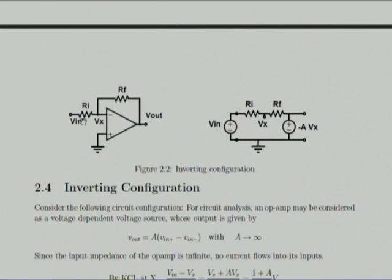Consider a configuration like this. This is an ideal op amp and one of the inputs is grounded. Therefore, the output is some gain A times Vx, and its output impedance is 0, input impedance is infinite. So the input is not loading anything and it is a voltage-dependent voltage source.